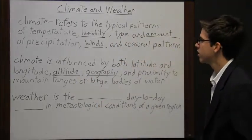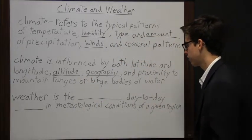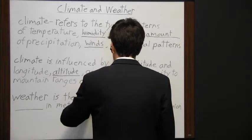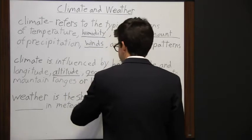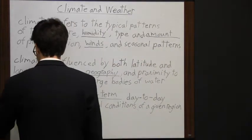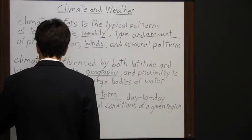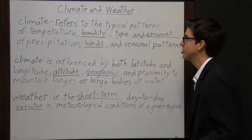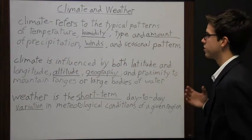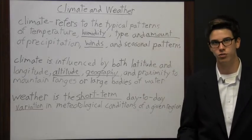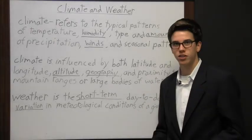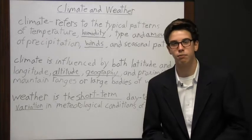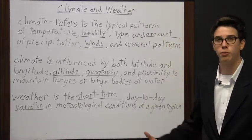Large bodies of water. So we can contrast that with weather. Weather is the short-term day-to-day variation in meteorological conditions of a given region. Weather is what's reported on the news each day. The climate of Southern California is dry and sunny, but the weather on Tuesday will be rainy.